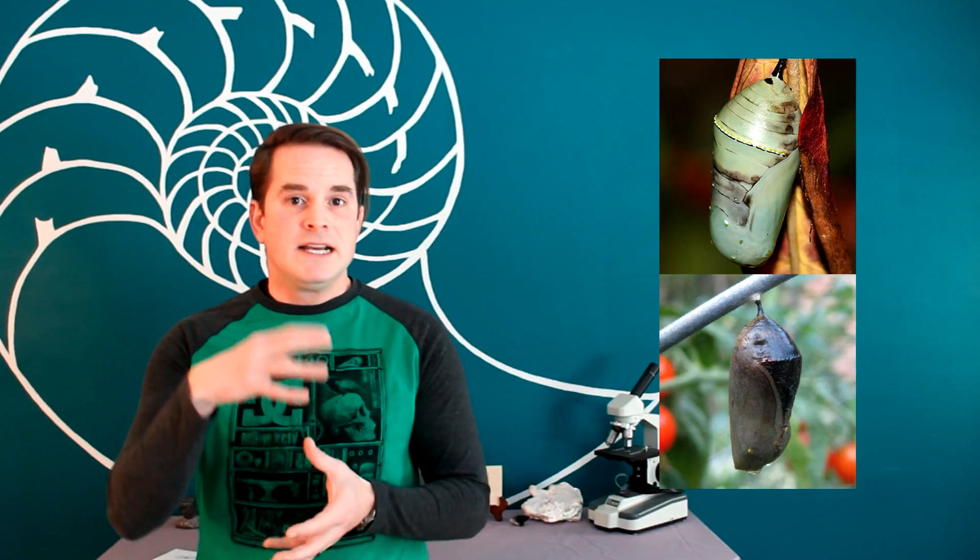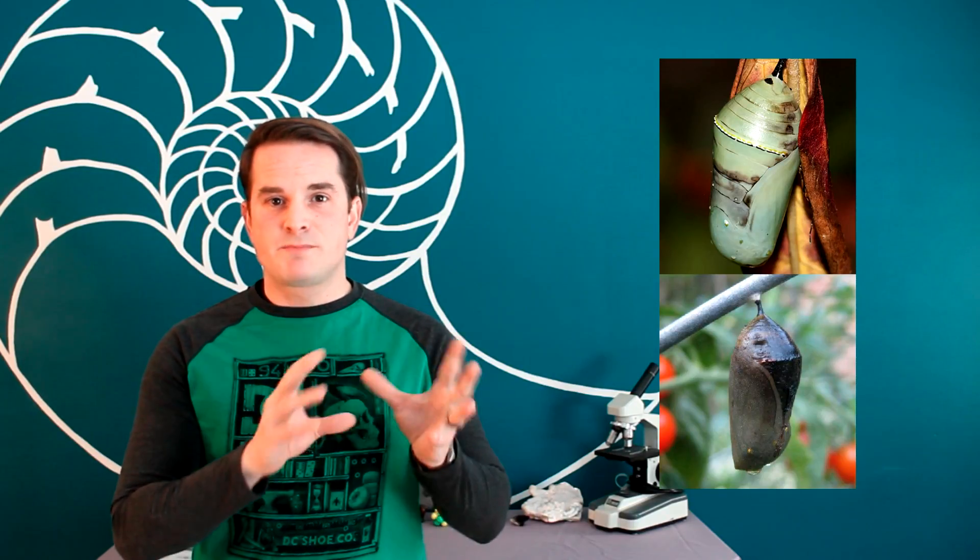Once the caterpillar starts to pupate and goes into a chrysalis, a lot of changes are happening with that caterpillar as it forms itself into the adult butterfly. And during that time, the bacteria still continue to multiply. In some cases, they've multiplied in such a large number that the actual butterfly doesn't fully develop. The pupa looks kind of brown and spotted with different colors, and it never emerges as an adult. Those are the heavily infected cases.